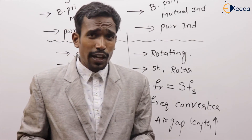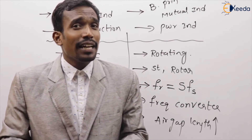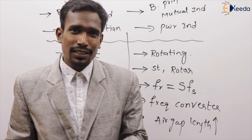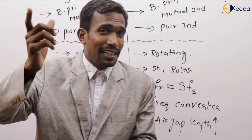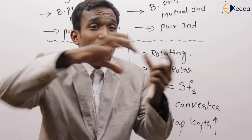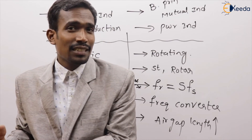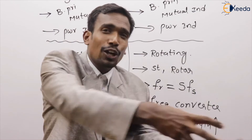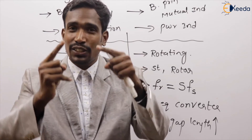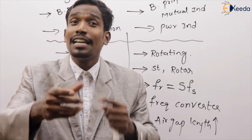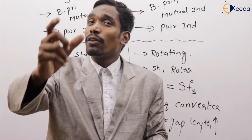If the air gap length increases in any electrical machine, it draws more magnetizing current. When magnetizing current increases, the no-load current increases. If no-load current increases, the power factor reduces. This is a very important point: in any electrical machine, if air gap length increases, power factor reduces.